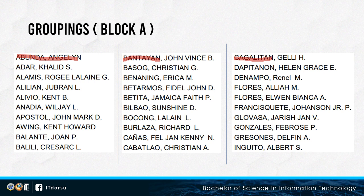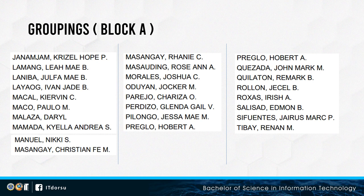If the leader is not available, the second person on the list will take over. For example, if the leader is absent or not participating, the next person assumes the role. Groups are organized alphabetically, with approximately 10 members in each team, to make the workload more manageable.